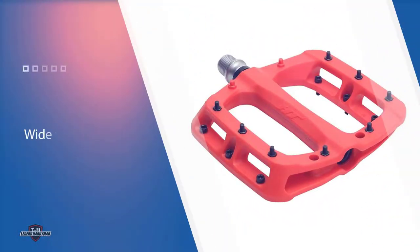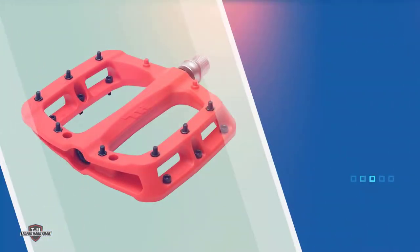Over time, though, knocks and scrapes can leave the plastic body looking a little scruffier than an aluminum alternative would. There are 10 replaceable pins on each side of the 105mm x 107mm platform, and the weight comes in at 349 grams.